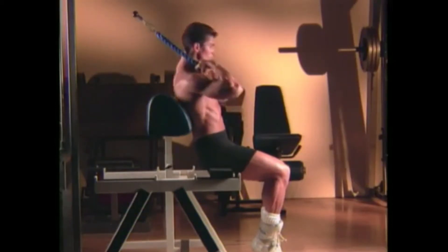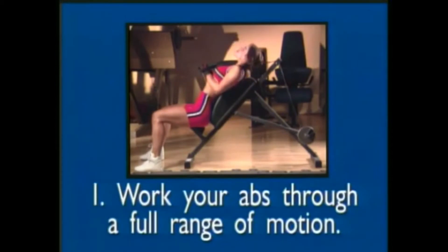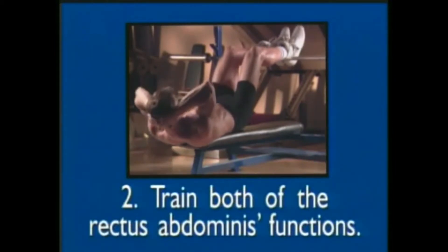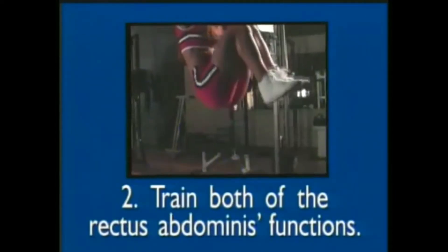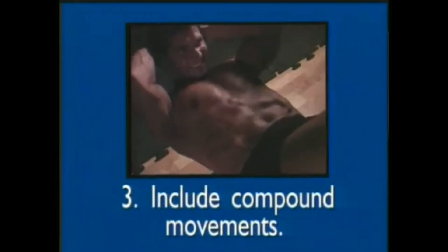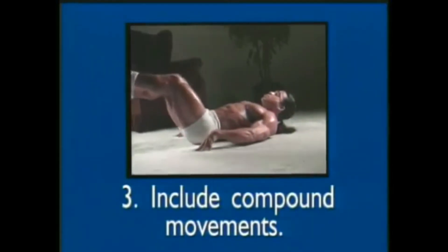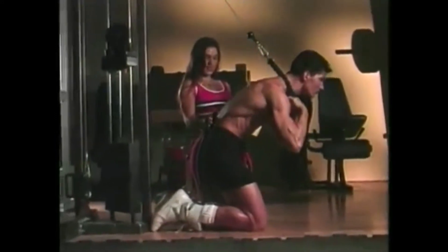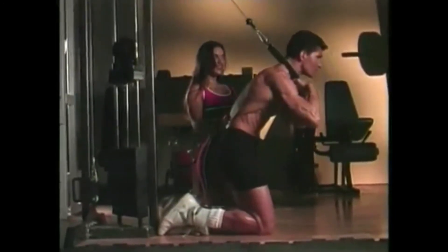Here are the key points to remember when constructing your ultimate ab routine. One: work your abs through a full range of motion — don't neglect the back-arched position that pre-stretches the rectus abdominis. Two: train both rectus abdominis functions — a movement that pulls your ribcage toward your pelvis, often called upper ab work, as well as one that curls your hips toward your torso, or lower ab work. Three: exercises that isolate the abs are important, but also include compound movements that hit the abs with the help of other muscle groups such as the hip flexors. Armed with these three tips, let's construct power-packed ab programs that will chisel your midsection — routines so efficient they take less than 10 minutes each to complete.